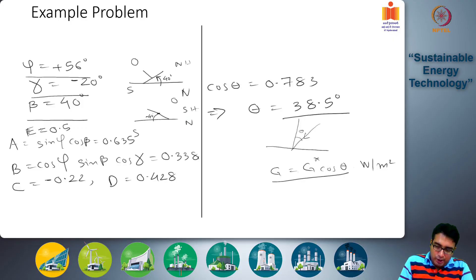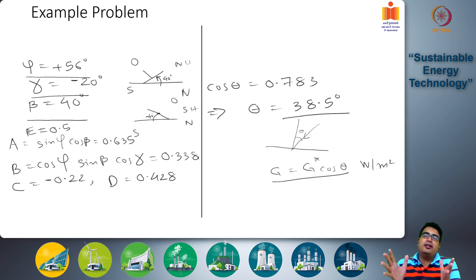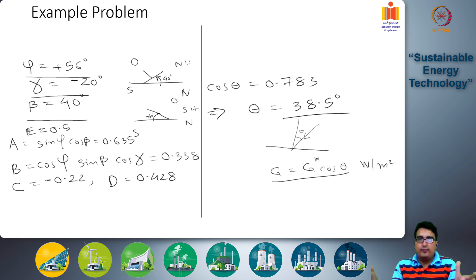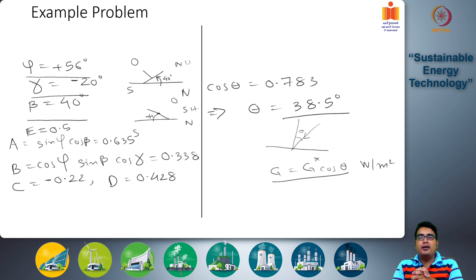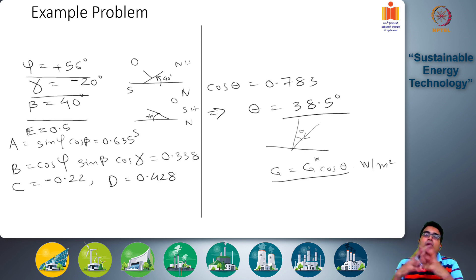We will start our discussion on the various types of technologies that are commonly used to harness solar energy flux. This solar energy arrives as electromagnetic radiation — light energy, infrared radiation, and ultraviolet radiation. There are many ways to convert this light energy of the sun into useful work.